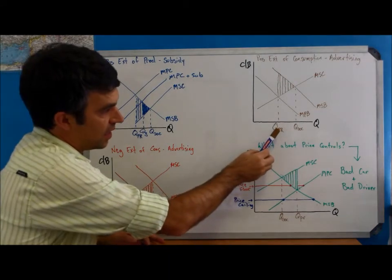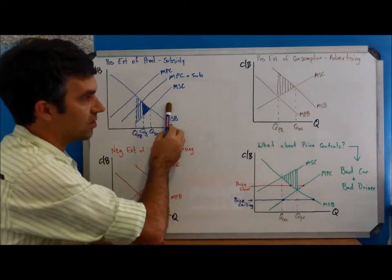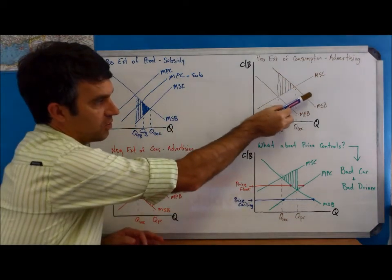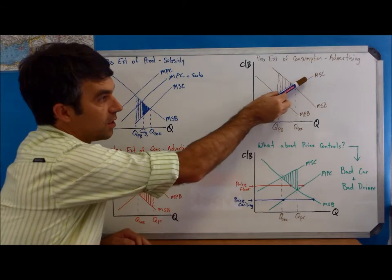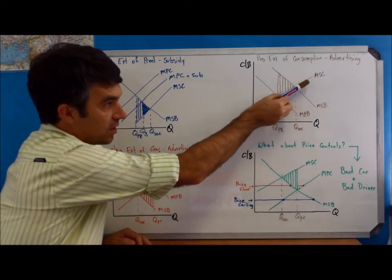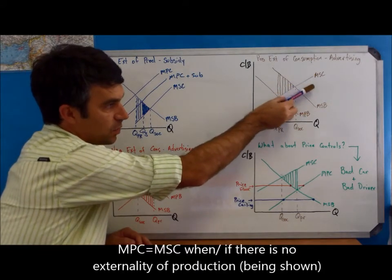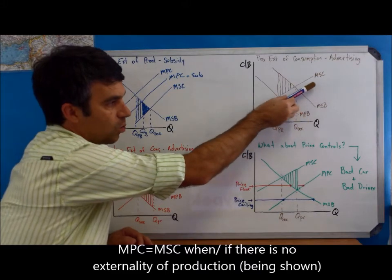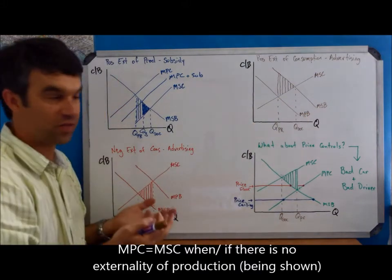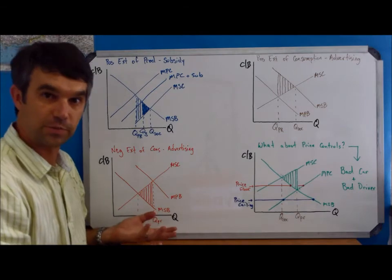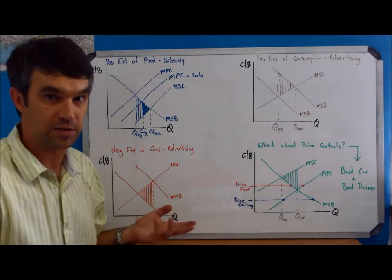We could try to use a subsidy just like we used over here to push this curve down. And by pushing the MSC curve down, this would be the MPC curve that we would be pushing down at that point. We can do that, however, there's a big negative effect and that is subsidies are expensive. It would take a lot of money to do that.